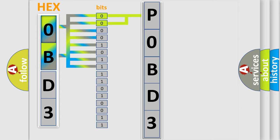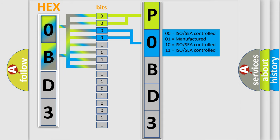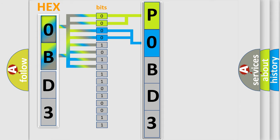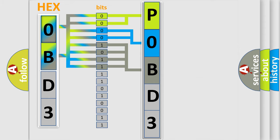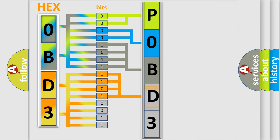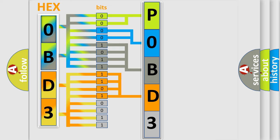By combining the first two bits, the basic character of the error code is expressed. The next two bits determine the second character. The last four bits of the first byte define the third character of the code. The second byte is composed of eight bits: the first four bits determine the fourth character, and the last four bits define the fifth character. A single byte conceals 256 possible combinations.